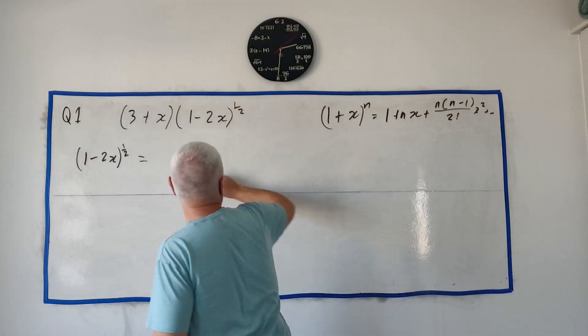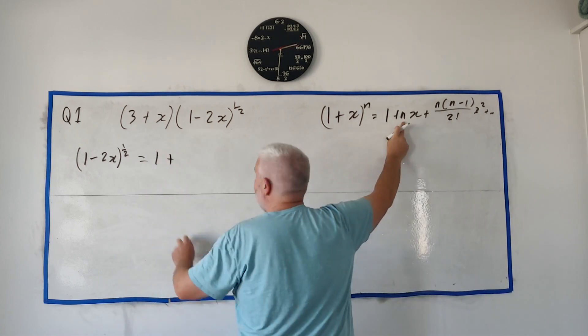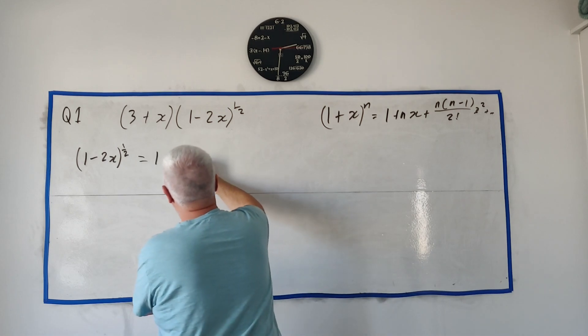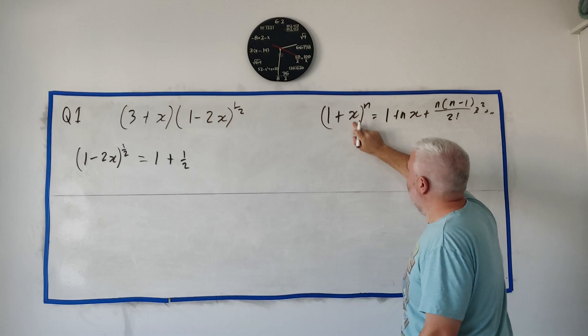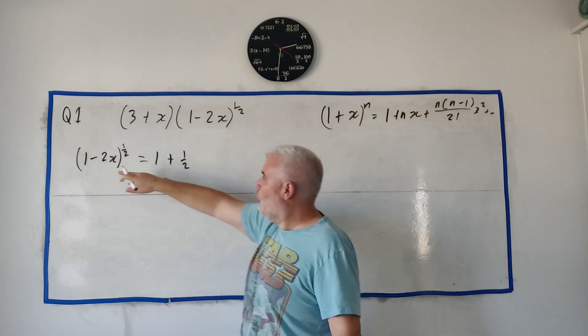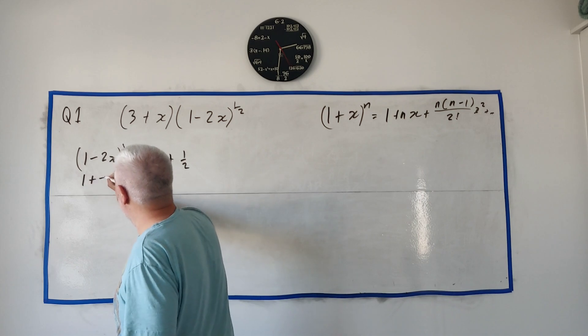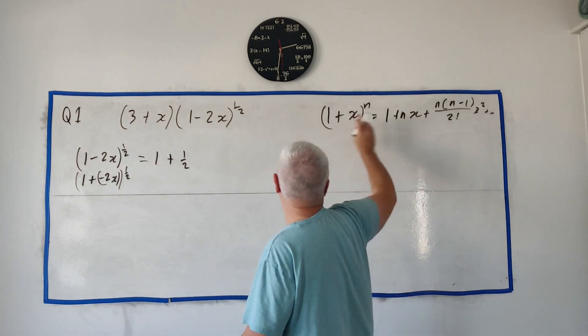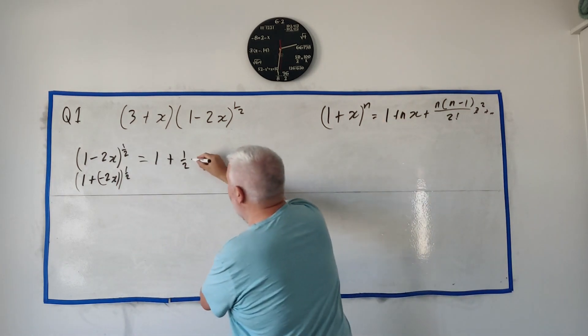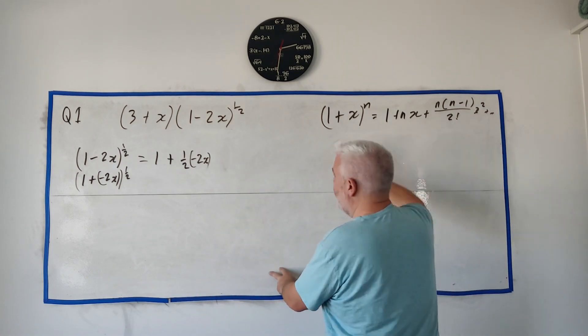Okay, so using this expansion over here, we get this equals 1 plus n is a half. That's a half. Now, this is a half. Sorry, I never said it here. 1 plus x, this is 1 minus 2x. Well, really this is just 1 plus minus 2x to the power of a half. Okay, so everywhere you see an x here, we're just going to put a minus 2x.